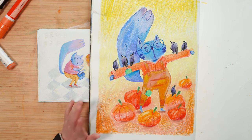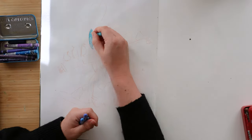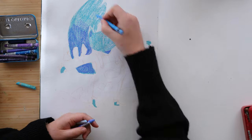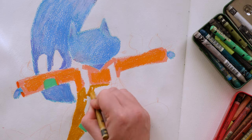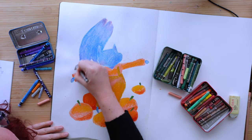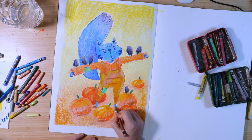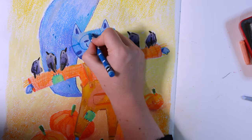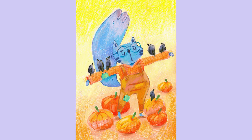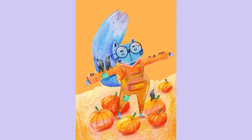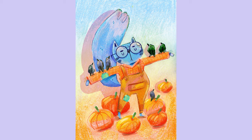This one was the pumpkin patch prompt. I drew Digby in a field as a scarecrow, but as usual he's not doing a very good job - he's just attracted all the birds to him instead of scaring them away. He has all his little crow friends on him and some pumpkins on the floor. I changed quite a lot in Procreate, recoloring the background because I didn't like the yellow. That's one cool thing about digital - you can change things afterwards, even if you use it as a crutch sometimes.